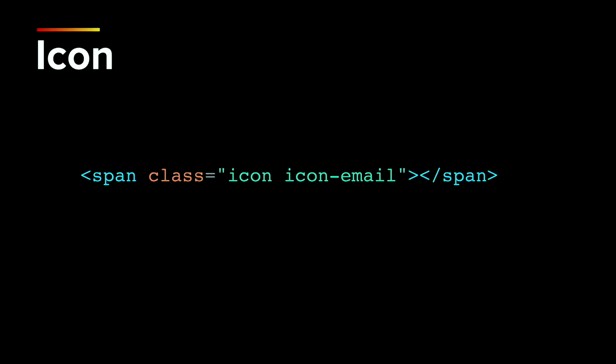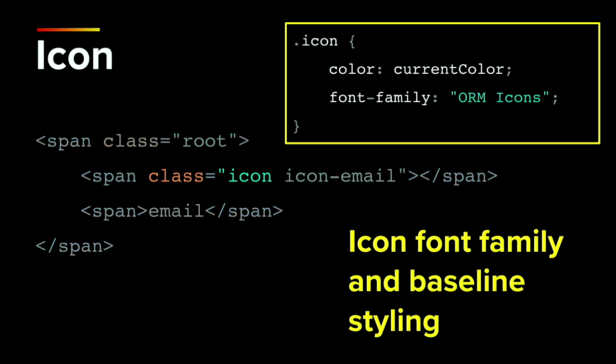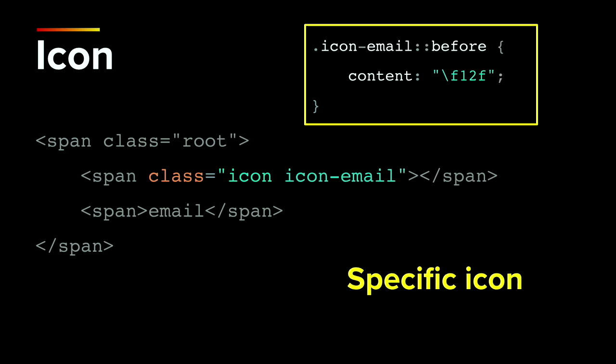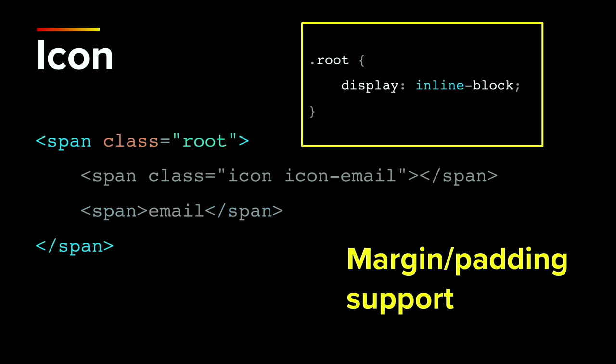I'm going to go over an example of how to make an accessible icon component using semantic HTML and the icon font technique. This is what you typically see as an icon font element in the wild, but it's not accessible. For an accessible icon pattern in HTML, you start with a span element and use a CSS class to attach the icon font family and baseline styling, and attach the specific icon you want to represent. Then in a sibling span, you pass in a descriptive icon name to give context. We're using spans here purposely because they are inline elements.